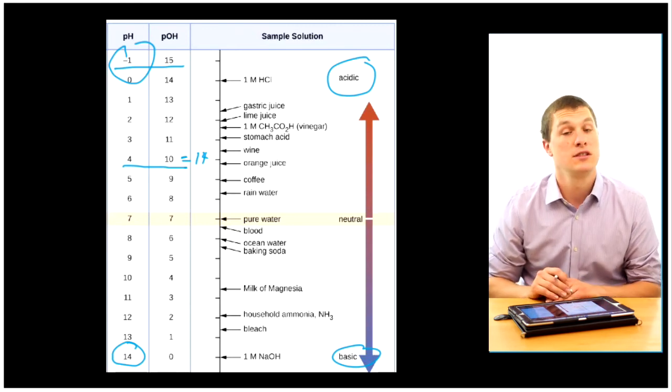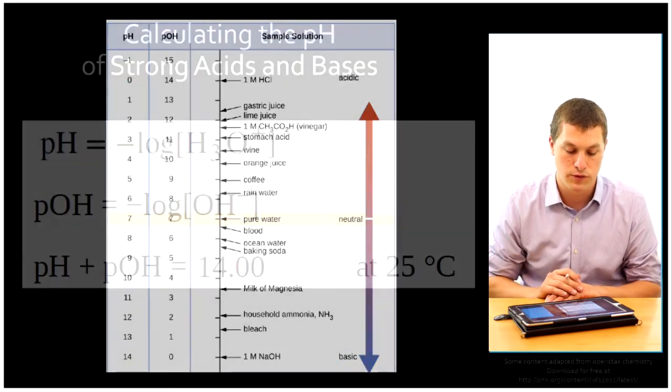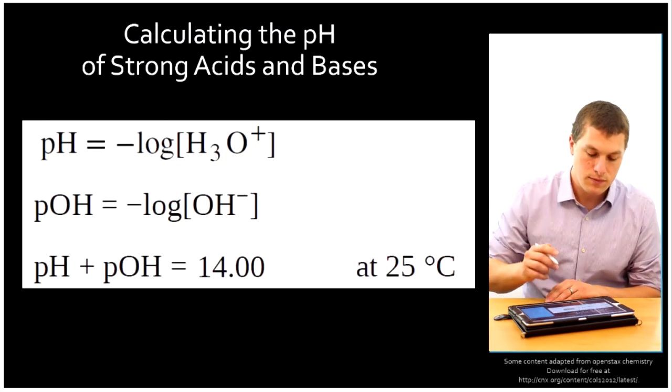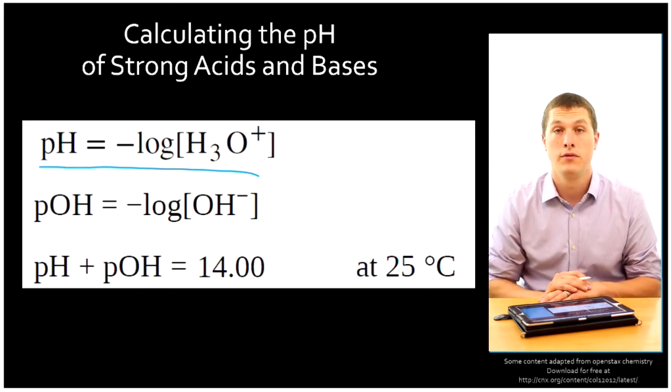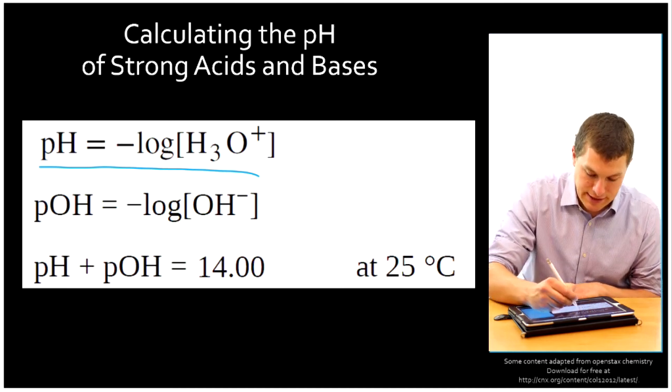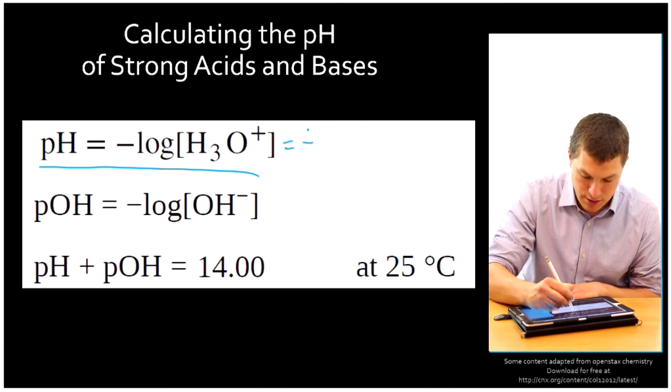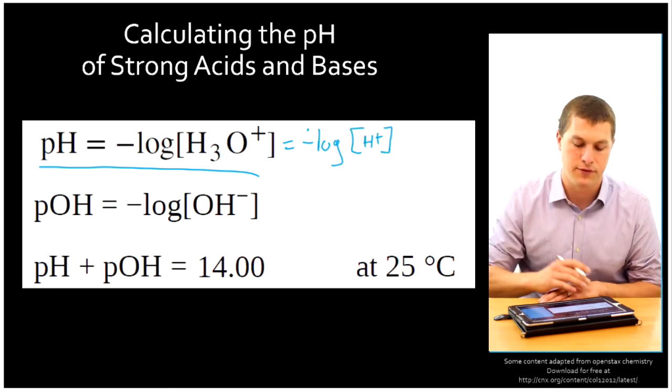So we're going to use a few equations in this video to calculate the pH of a strong acid and base. Let's take a look at those, and then we'll do a few problems. So first thing we need to know, if we want to calculate pH, it's equal to the negative log of the H3O+ ion. That's called the hydronium ion. And that's actually identical to the concentration of hydrogen ions. So these are both correct definitions of pH.